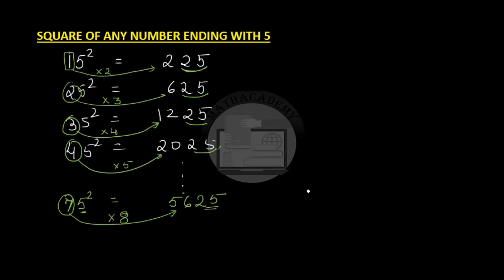Let us look at one more example. For example, 105 square. So, this 5 here will yield us 25. So, we got 25 here.